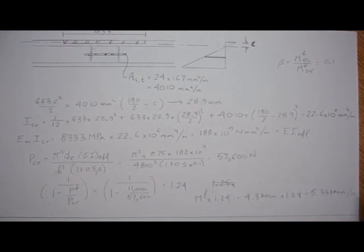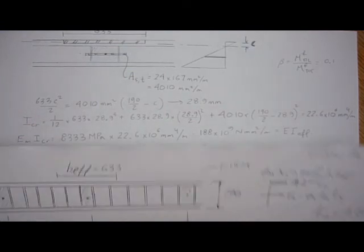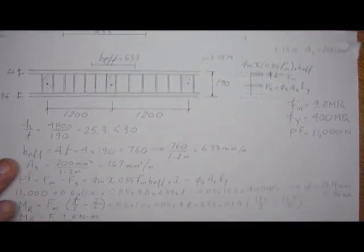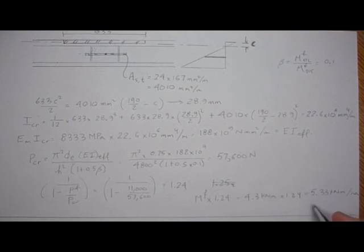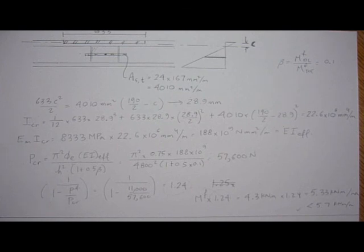Moment factored times 1.24, this value here which would be the moment factored is 4.3 kilonewton meters times 1.24 amplification factor, which is 5.33 kilonewton meters per meter.